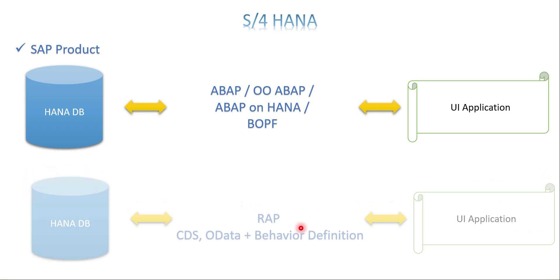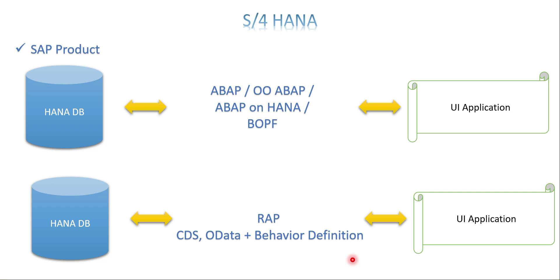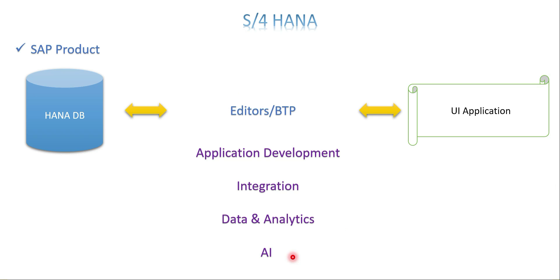One important addition about RAP: it replaces BOPF with the help of behavior definitions. So RAP = CDS + OData + behavior definitions. Whenever there is a definition, there is always an implementation - like classes and methods, where a method is defined first and implemented later. The same applies here: behavior definition and behavior implementation are both needed to have one full application. That is what comes under RAP. Another key terminology is BTP - Business Technology Platform - which is a platform where you can create applications, do integrations between different modules, data analytics, and AI.